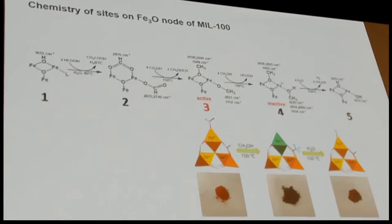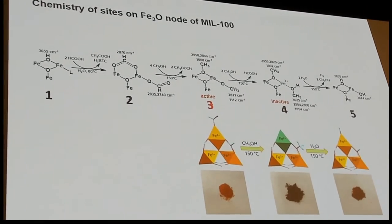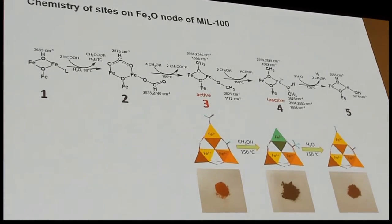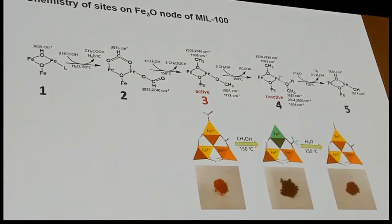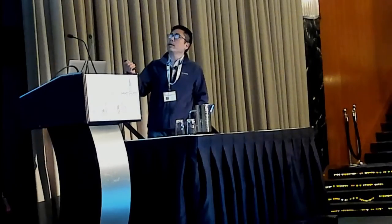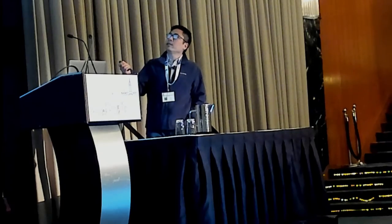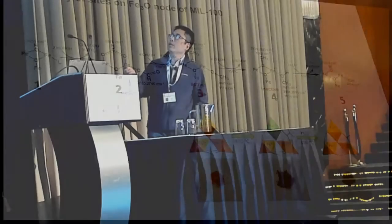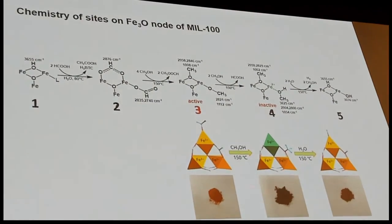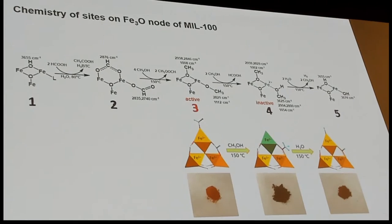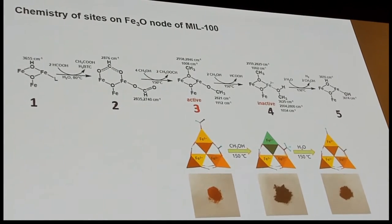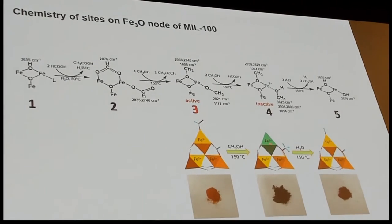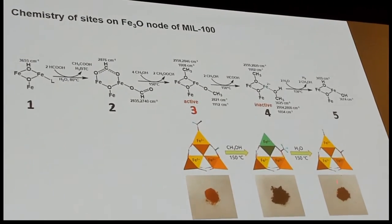Here is the chemistry we observed. This is essentially what we also see on aluminum-based MIL-100. The difference is that iron can be reduced to Fe²⁺, causing deactivation during catalysis. Water can actually regenerate the site. From the color, we can see that after reduction of one of the iron centers, the sample changes from brown to black. If we use water to regenerate it, it turns brown again.